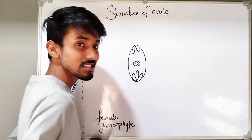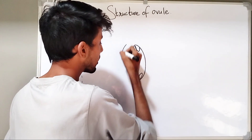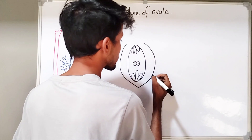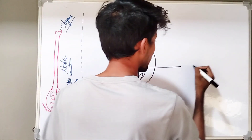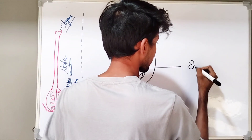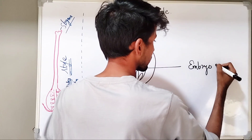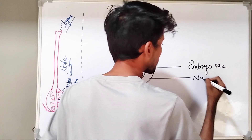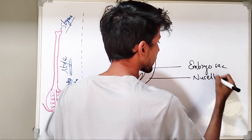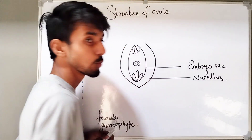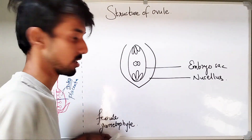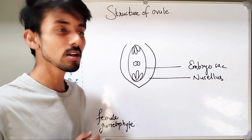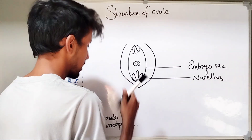Surrounding the embryo sac, we have a layer of tissue called as the nucellus. Now, this is the embryo sac, and this will be the nucellus. What will be the function of nucellus? Nucellus is nutritive in function — nucellus will provide nutrition to the developing embryo sac.